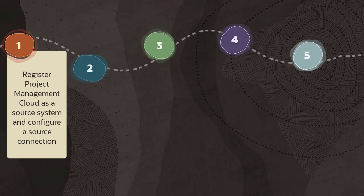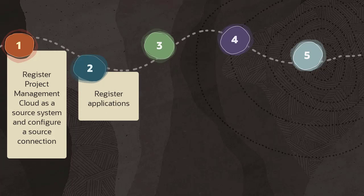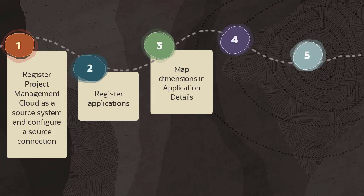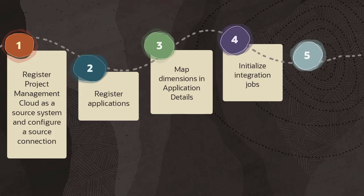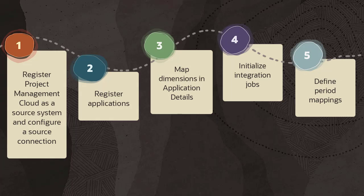First, register Project Management as a source system and configure a source connection. Second, register applications. Third, map dimensions and application details. Fourth, initialize integration jobs used to push data. And fifth, define period mappings. You configure source systems and define period mappings in Data Management. All other tasks are completed in Data Integration.